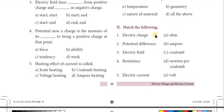Match the following: Electric charge — Option C — Coulomb. Potential difference — Option E. Electric field — Option D — Newtons per Coulomb. Resistance — Option A — Ohm. Electric current — Ampere.